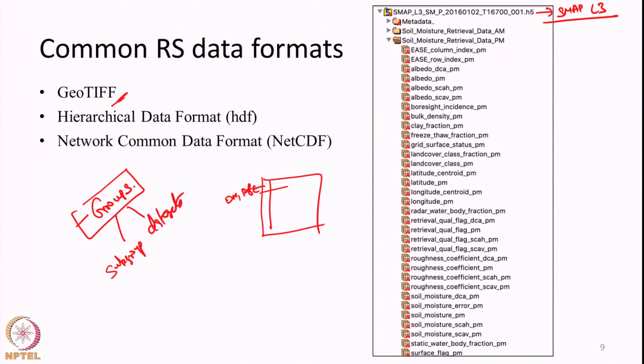An example of HDF data from SMAP L3 is shown in the slide. HDF basically contains groups as its primary objects. Within groups there can be further subgroups or the actual datasets. Here it has 3 groups: Metadata, Soil Moisture Retrieval Data AM, and PM. Within these groups there can be datasets like land cover class, latitude/longitude, water body fraction, and soil moisture itself. You can think of each dataset as a separate band in analogy with GeoTIFF. Each one can represent data or metadata.